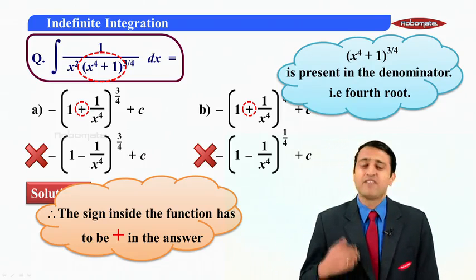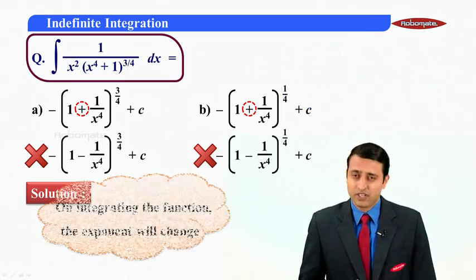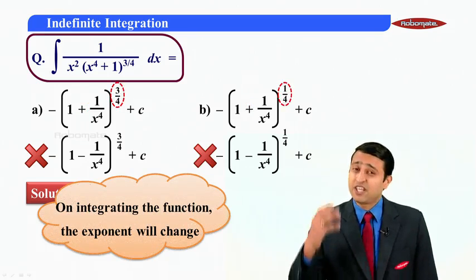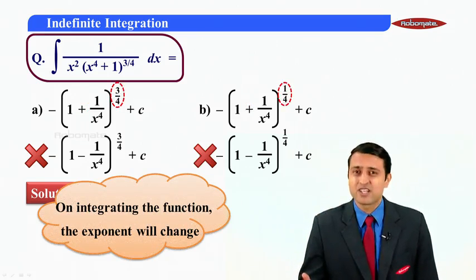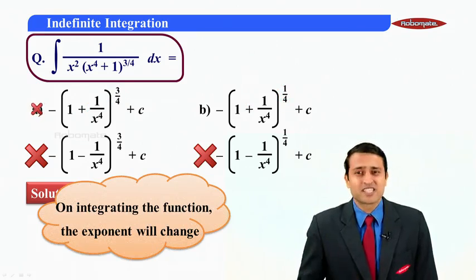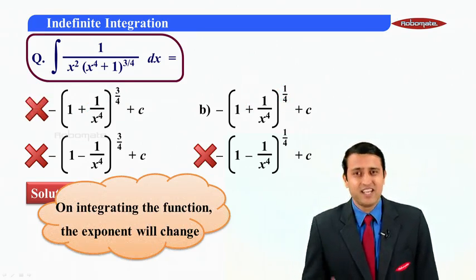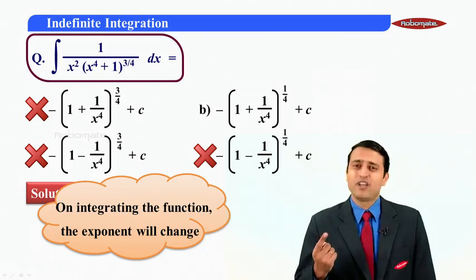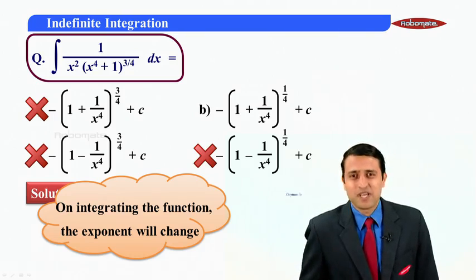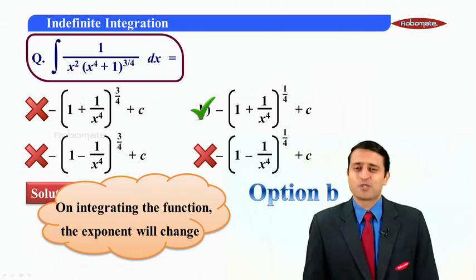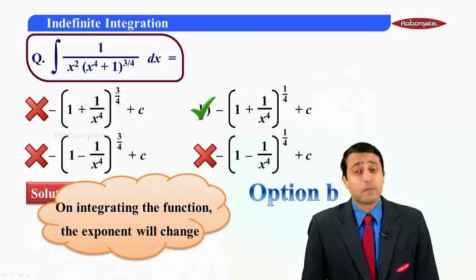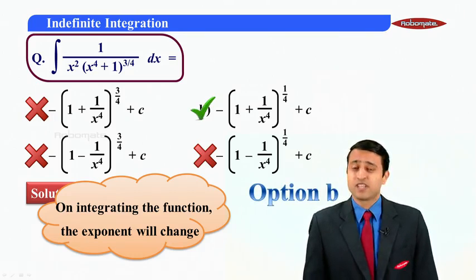Now my dear students whenever we integrate a function the exponent changes on integration. Correct? So in this case can I say 3 by 4 also cannot be the answer and therefore we are left with only one option. Obviously that has to be an answer and therefore the answer is option b. A much simpler and much sensible way of solving the same question.